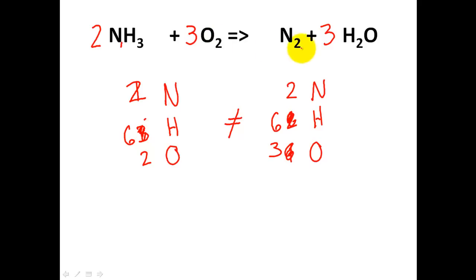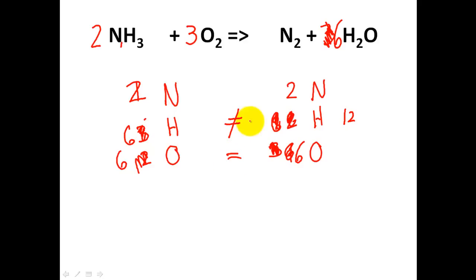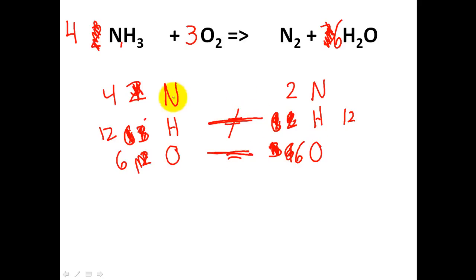I need a number that three and two both go into — that's six. My coefficient on the reactant oxygen becomes three times two equals six. Erasing the previous value, I put a six there. Taking inventory: three times two is six oxygens; six times two is 12 H's; six times one is six oxygens on the product — O's are balanced. But H's are not: 12 versus six. I need four times three to give me 12 H's, and four times one is four N's. Now the nitrogens are not balanced: I need two on the reactant side, and two times two gives me four nitrogens. The equation is balanced.